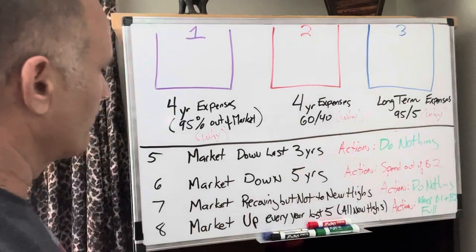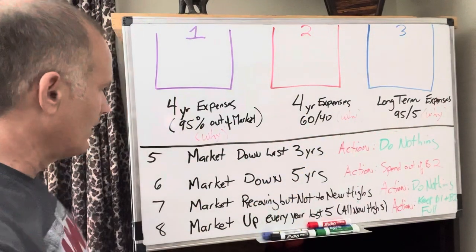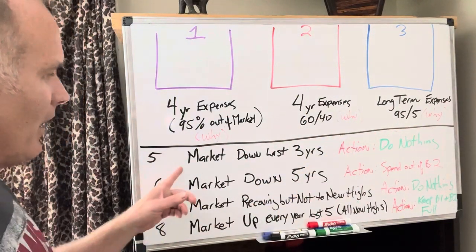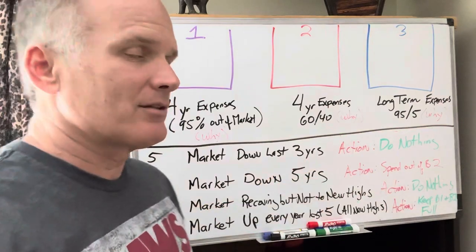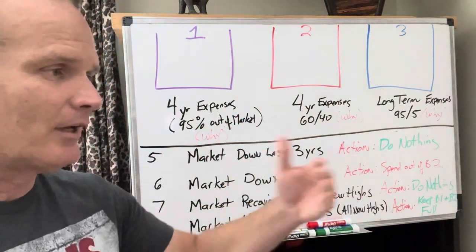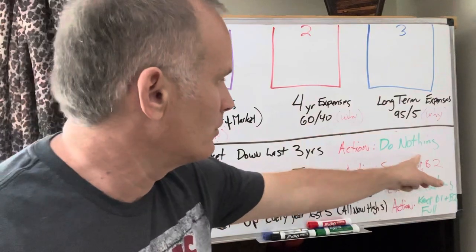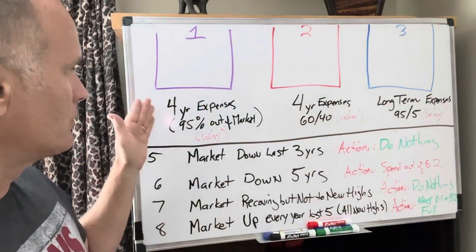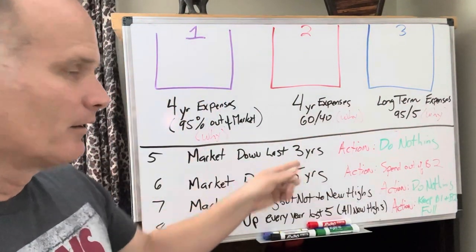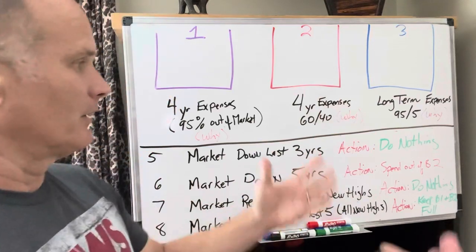Four more examples. Top of this is exactly the same. Example number five, the market is down the last three years - went down 10% and 20% and 30%. What action do you take? Do nothing. Remember in this situation, you got four years of expenses here. You're in year three of that. So let her go.